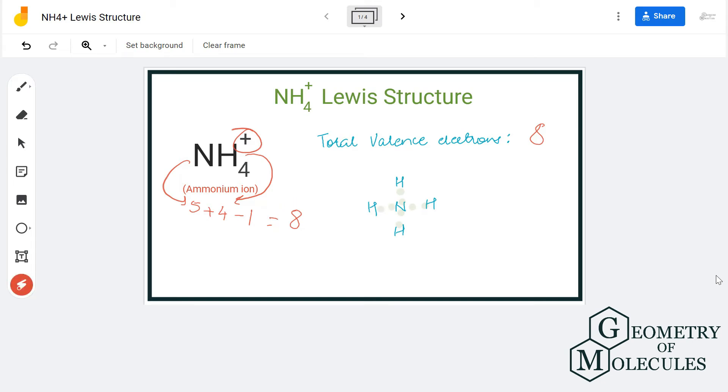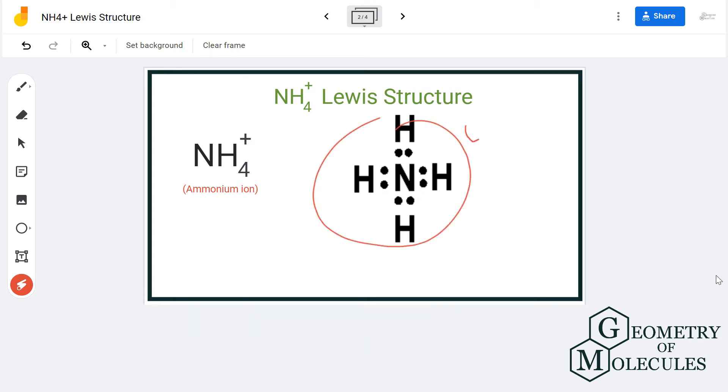The octet for nitrogen atom is complete, as it has eight valence electrons in its outer shell. Even hydrogen has two valence electrons in its outer shell, which means it has attained a stable structure.